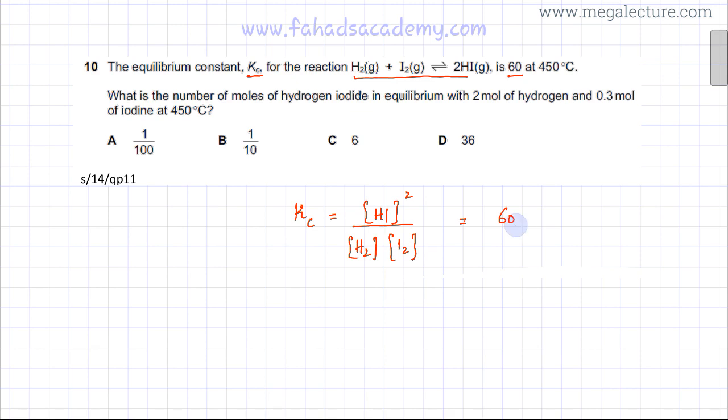So we already know the value of Kc which is 60. The moles of HI need to be found out. The moles of hydrogen are given, so it's going to be HI squared divided by 2, that's the moles of hydrogen.